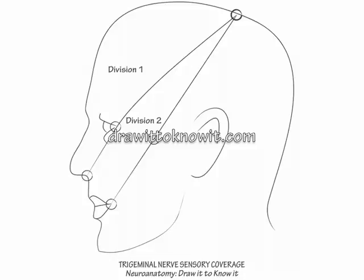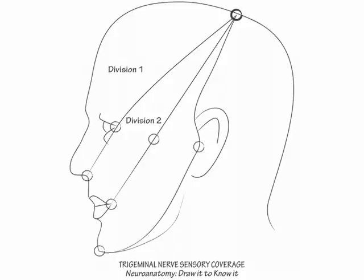Finally, mark a dot at the same superior posterior point, then at the tragus, and then the mentum. Connect these dots and label the region between this line and division 2 as division 3, the mandibular division.